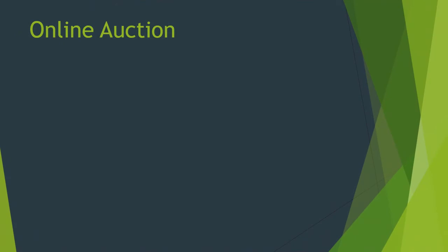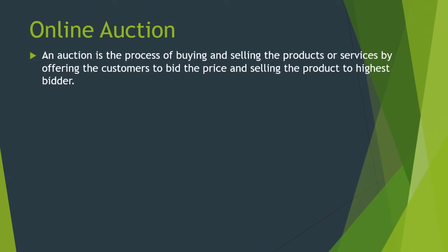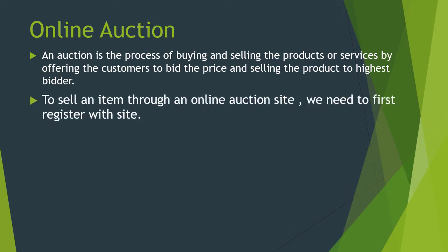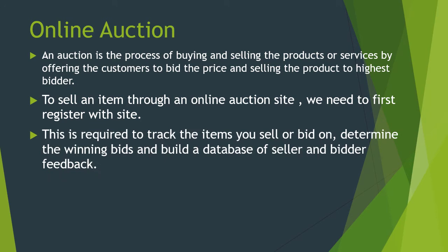Online auction is also very popular. An auction is the process of buying and selling products or services by offering customers the ability to bid a price, then selling the product to the highest bidder. In this process, you offer customers the chance to finalize the price of the product you want to sell, and when you get the highest price you sell to that customer. To sell an item through an online auction site, you need to first register with the site to track items, determine winning bids, and build a database of seller and bidder feedback.